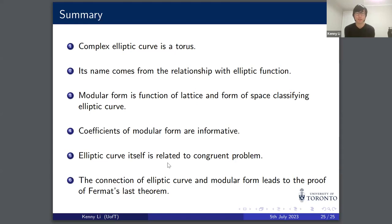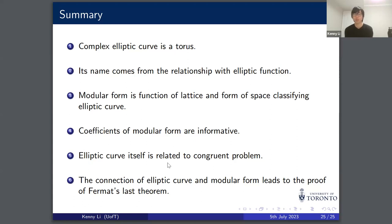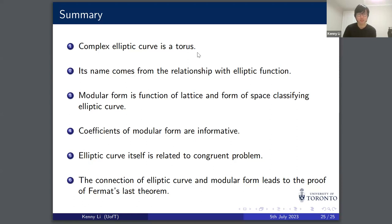This is the end of the talk. A quick summary: a complex elliptic curve is like a torus, and its name comes from its relationship with elliptic functions. A modular form is a function on a lattice and a differential form on the space classifying elliptic curves. The coefficients of modular forms are informative and related to seemingly unrelated topics like sphere packing and finite groups. Elliptic curves are related to the congruent number problem, and the connection between elliptic curves and modular forms leads to the proof of Fermat's Last Theorem.